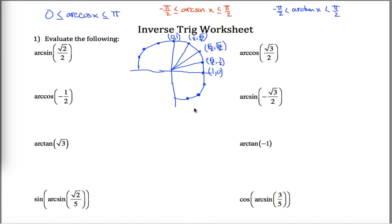Inverse Trig Worksheet Solutions. I jotted down a few notes here. First of all, our unit circle, and I labeled the points in the first quadrant, and then these three key facts up top concerning inverse trig functions: that arc cosine is always between 0 and pi, that is, the range of arc cosine is from 0 up to pi, whereas the range of arc sine is from negative pi over 2 to pi over 2, and similarly with arc tangent. So those facts I'll refer to over and over as I'm going through and answering these questions.